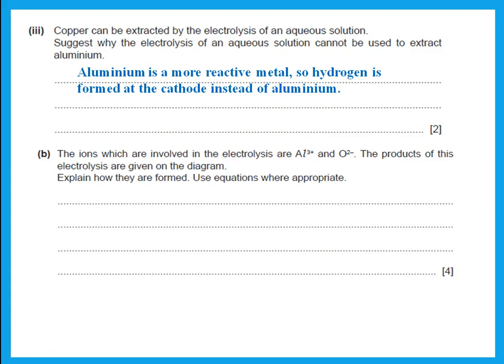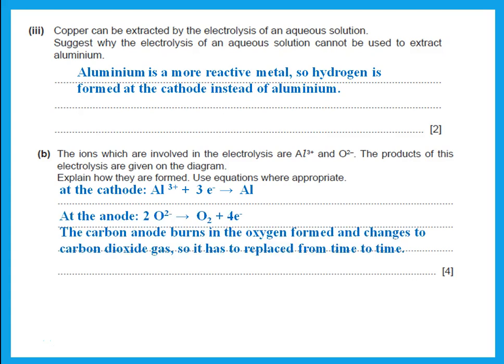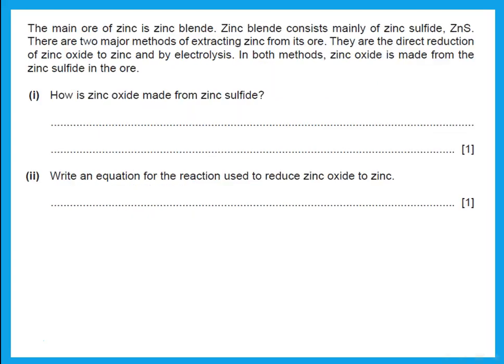The ions involved in the electrolysis are Al³⁺ and O²⁻. At the cathode, aluminium ions gain electrons to give aluminium — use equations where appropriate, and the equations must be balanced. At the anode, the O²⁻ ions lose electrons and become oxygen. The carbon anode burns in the oxygen formed and changes to carbon dioxide. So the three products are aluminium, oxygen, and carbon dioxide, which is why the anode has to be replaced from time to time.